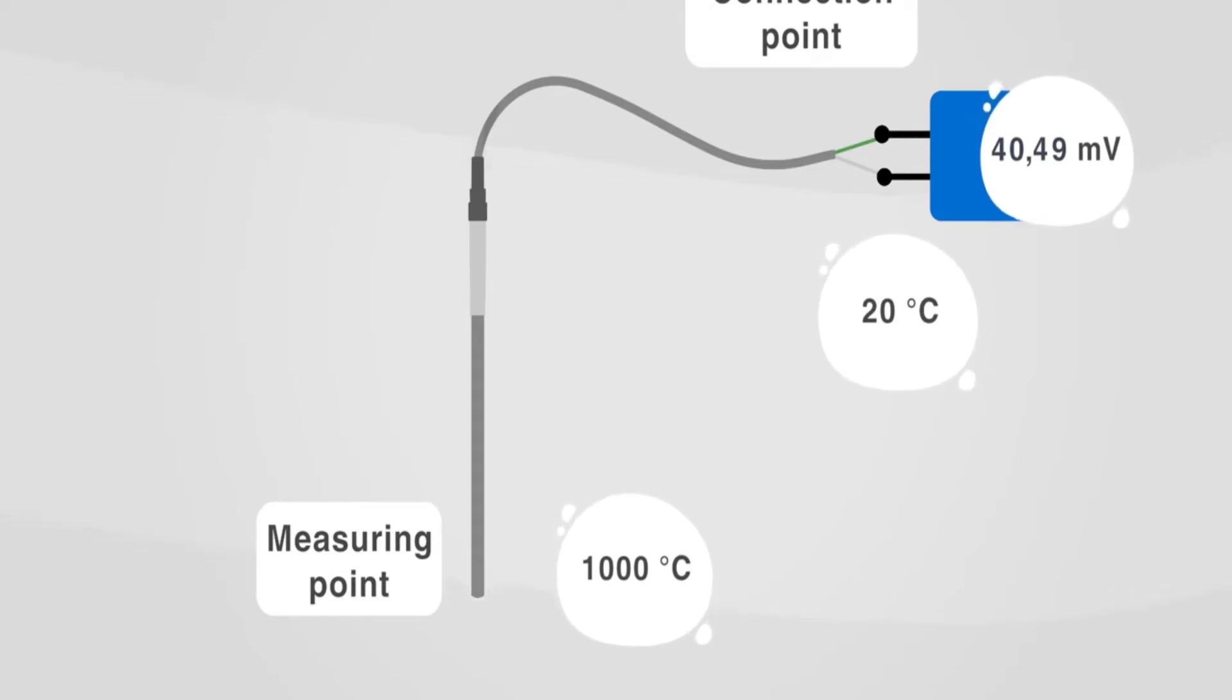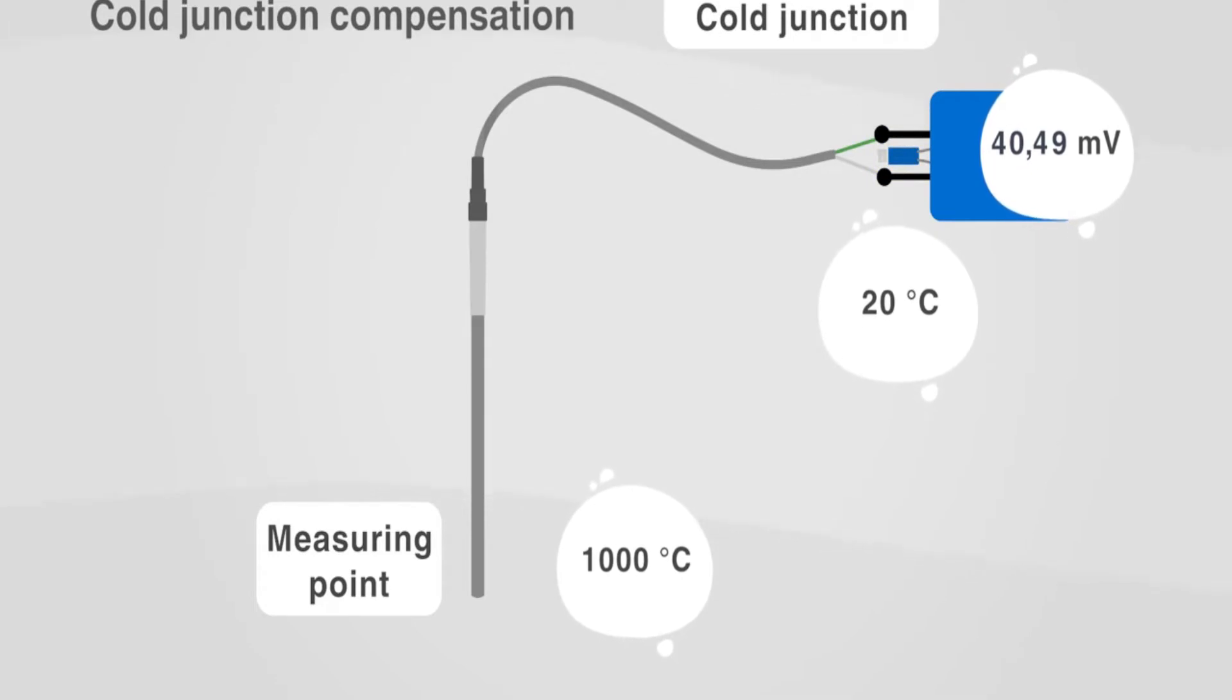For thermocouples, a cold junction compensation is necessary to ensure that the ambient temperature at the connection terminals of the cold junction does not affect the measuring result.